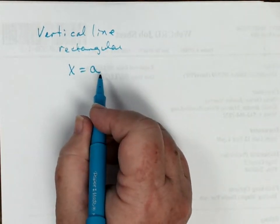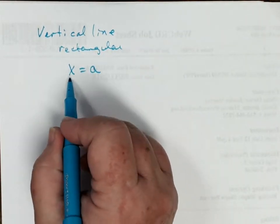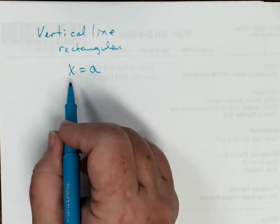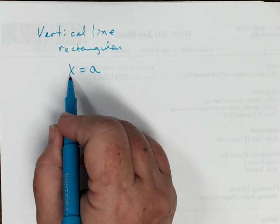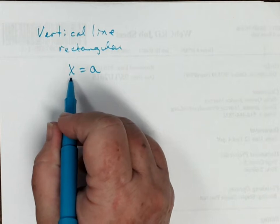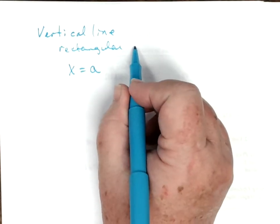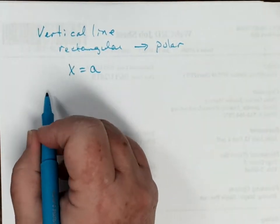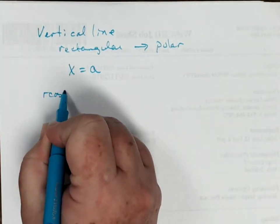And that can be any number, a. We realize that can be to the right, to the left, but we know it's a vertical line passing through a on the x-axis. But if I wanted to convert this to polar coordinates, x is equal to r cosine of theta.